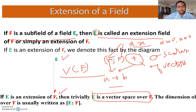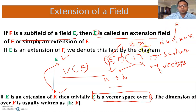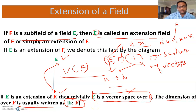यहाँ पर particularly E आ गया हमारे पास। अगर आप scalars F में से लेंगे — और E एक field है — तो सारी properties obviously true होंगी। So that's why यहाँ लिखा है: trivially E is a vector space over F। और अगर E, F के over vector space है तो हम E की dimension जरूर find कर सकते हैं। It is written by this notation — dimension of E over F — and this is called the degree of E over F।